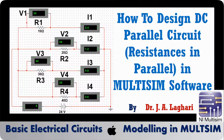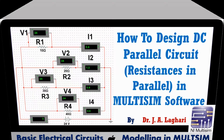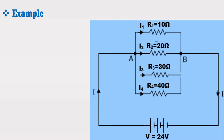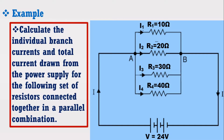For this purpose, I have considered an example as shown in the figure. The figure shows a DC parallel circuit consisting of 4 resistors across a 24-volt battery. We have to calculate the individual branch currents and the total current drawn from the power supply. Furthermore, we have to prove that the voltage in the parallel circuit remains the same.